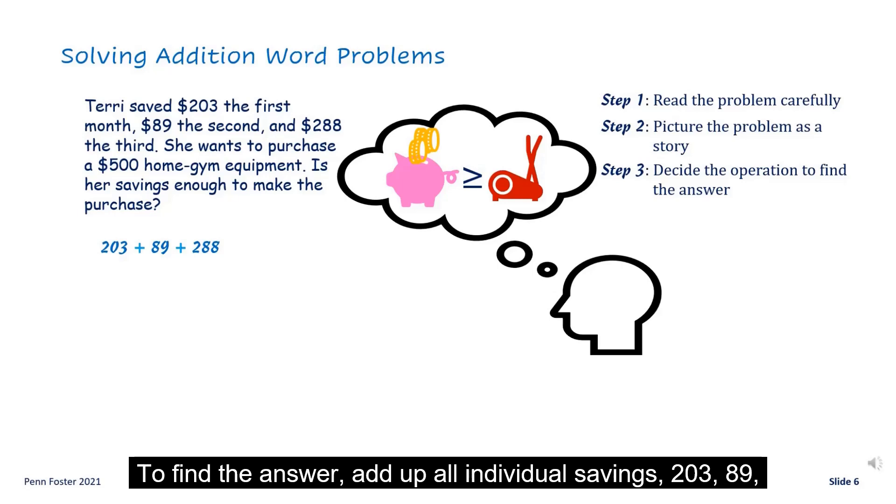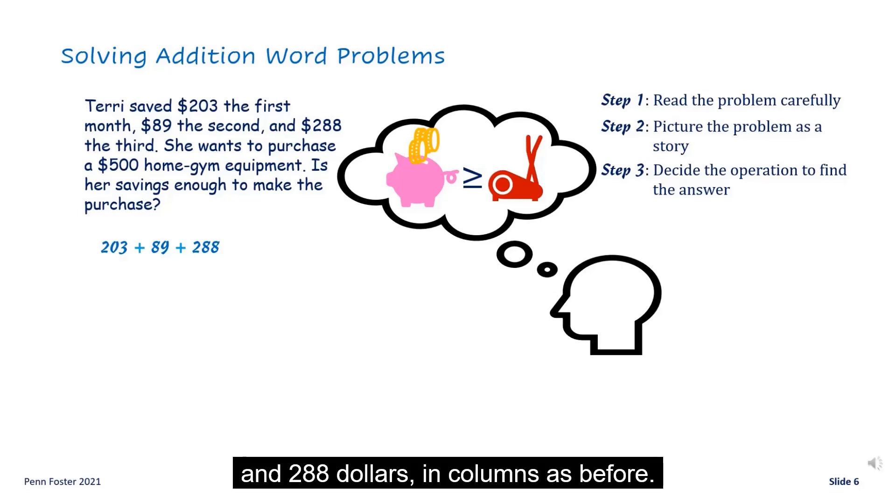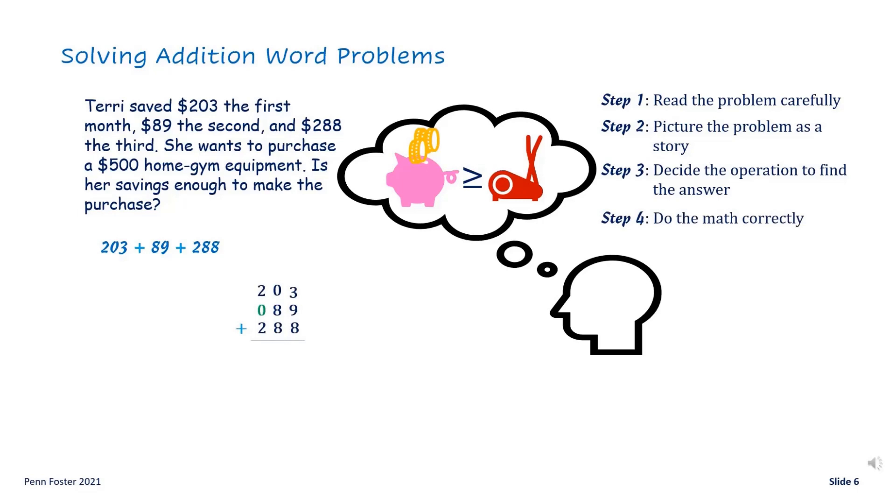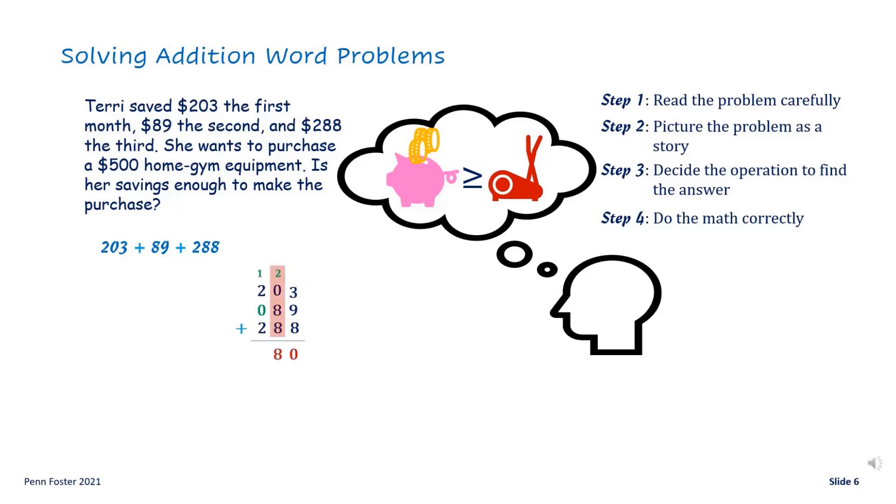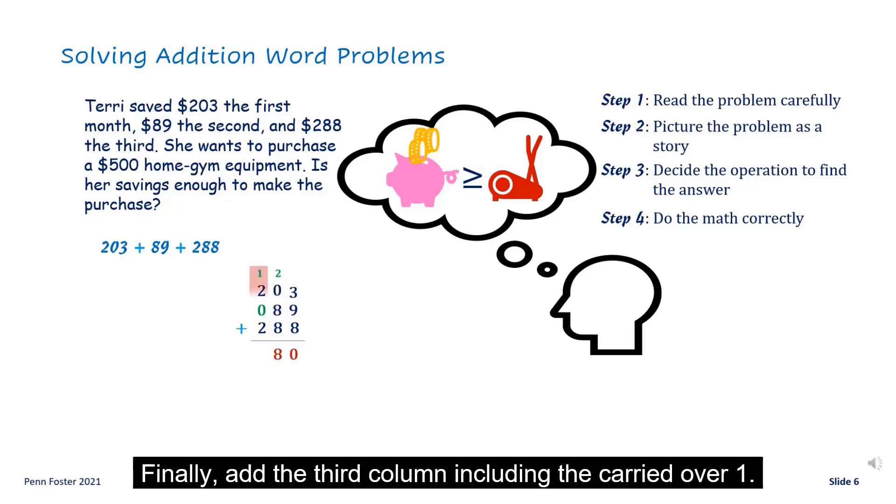$203, $89, and $288 in columns as before. Add the first column. Add the second column, including the carried over two. Finally, add the third column, including the carried over one.